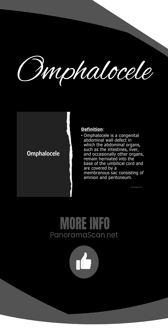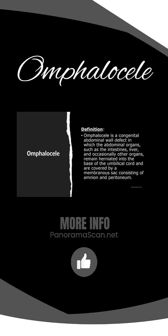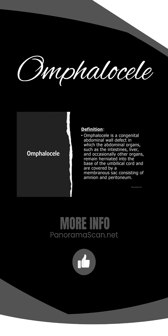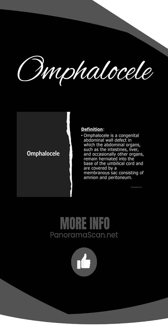A key characteristic of an omphalocele is that the herniated organs are covered by a membranous sac, which consists of two layers: amnion on the outer side and the peritoneum on the inner side. This protective sac differentiates omphalocele from other abdominal wall defects, such as gastroschisis, which we will discuss later.